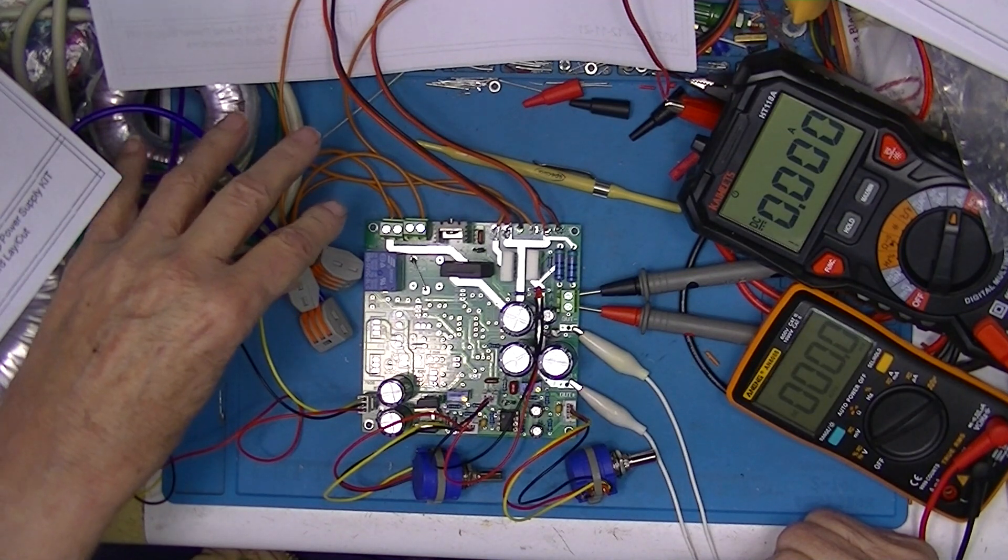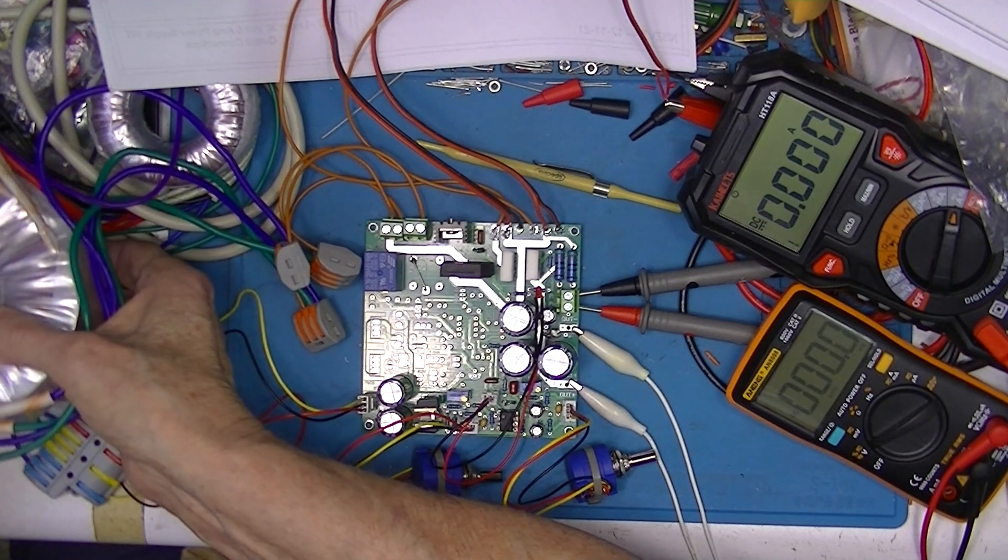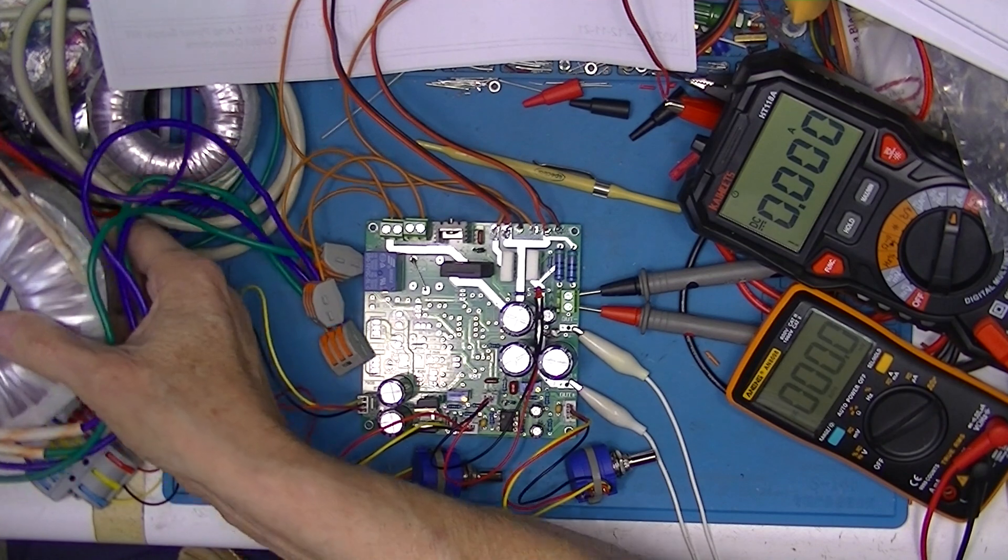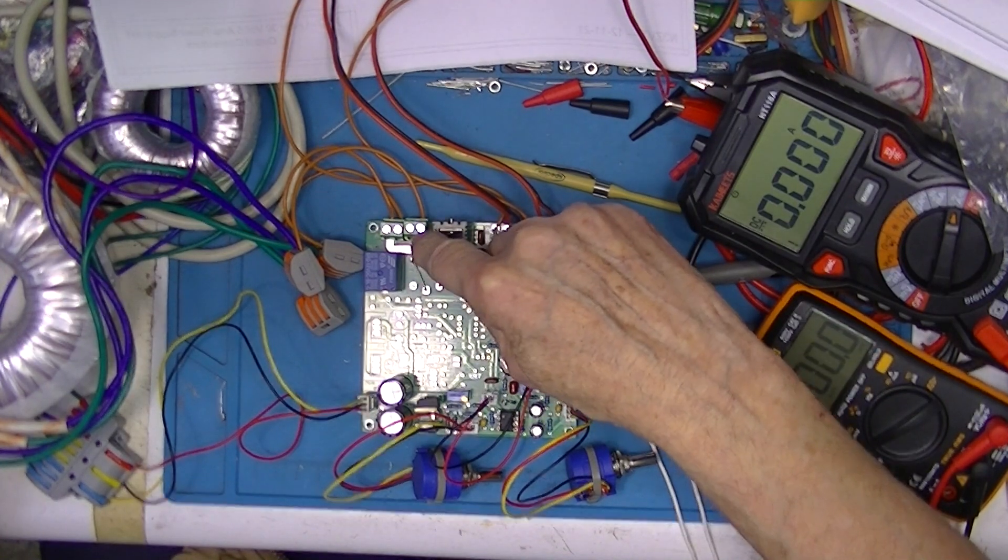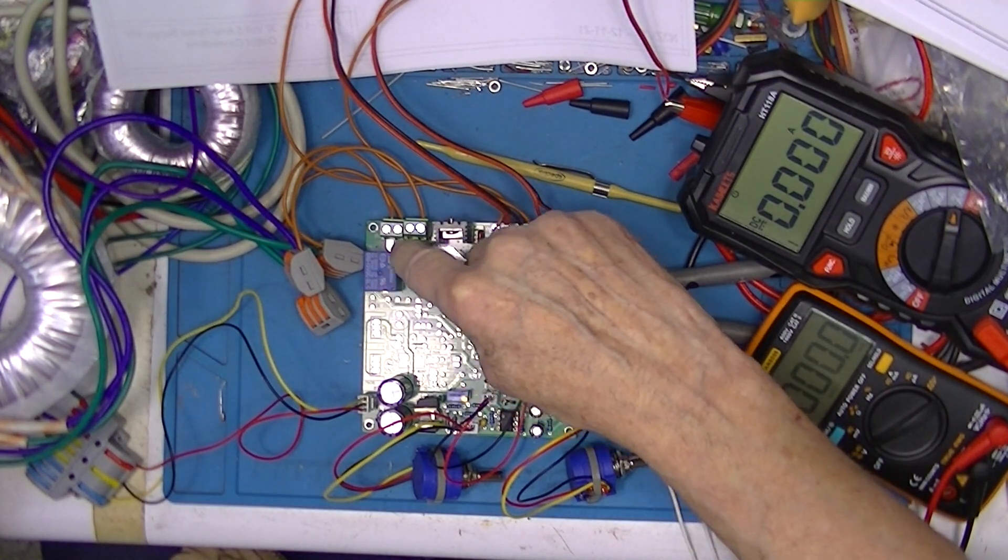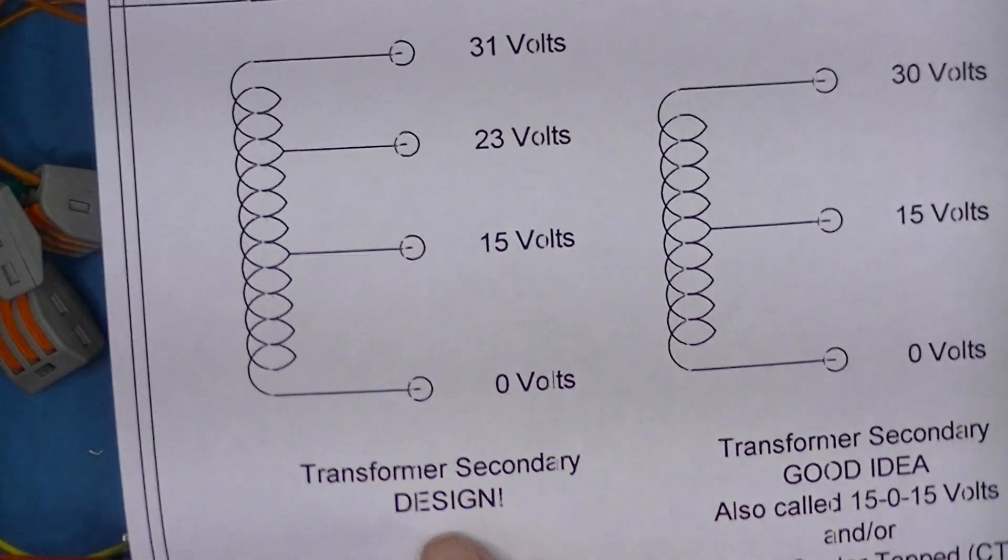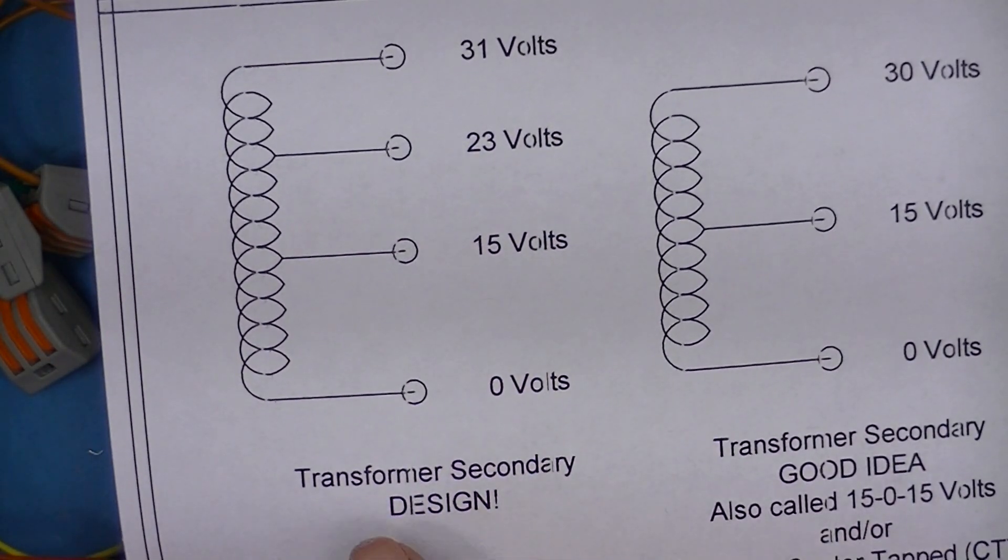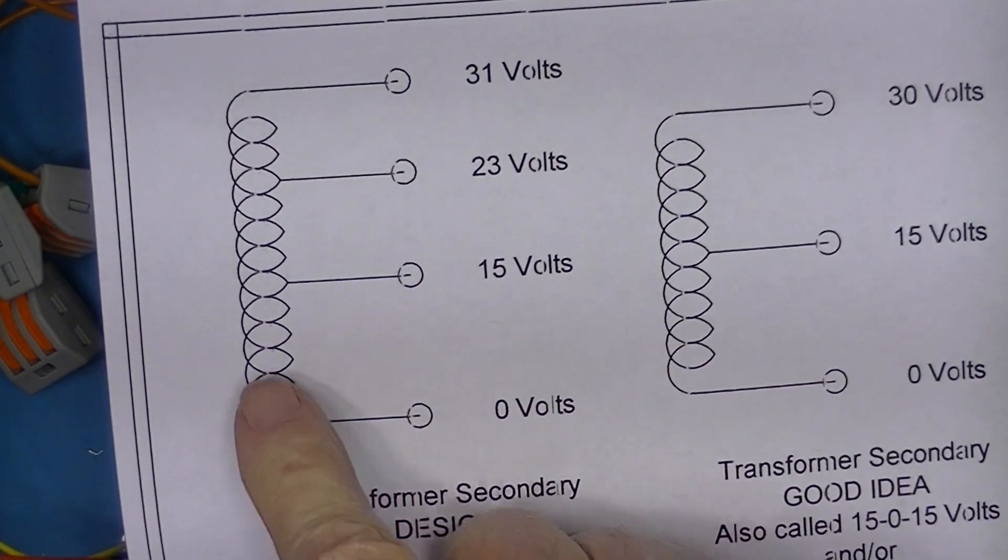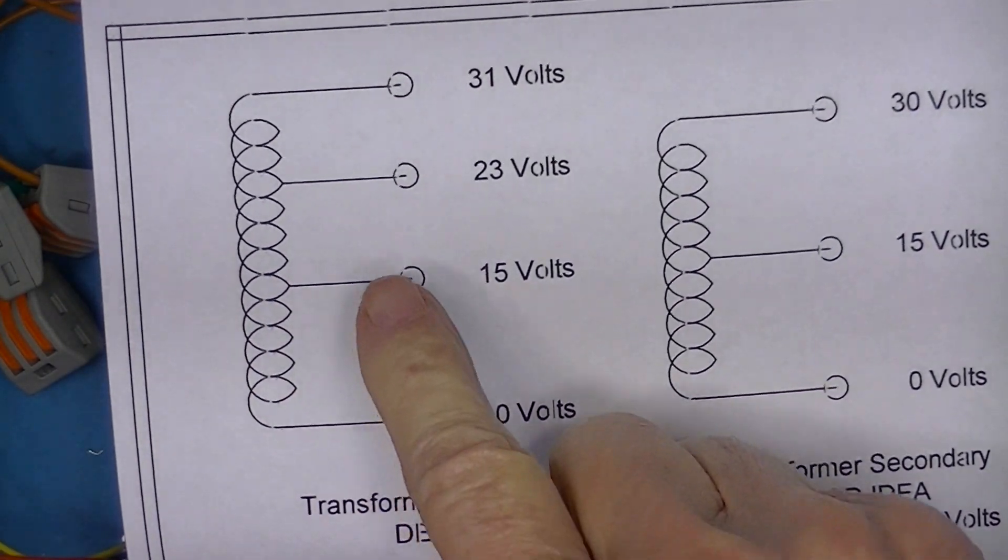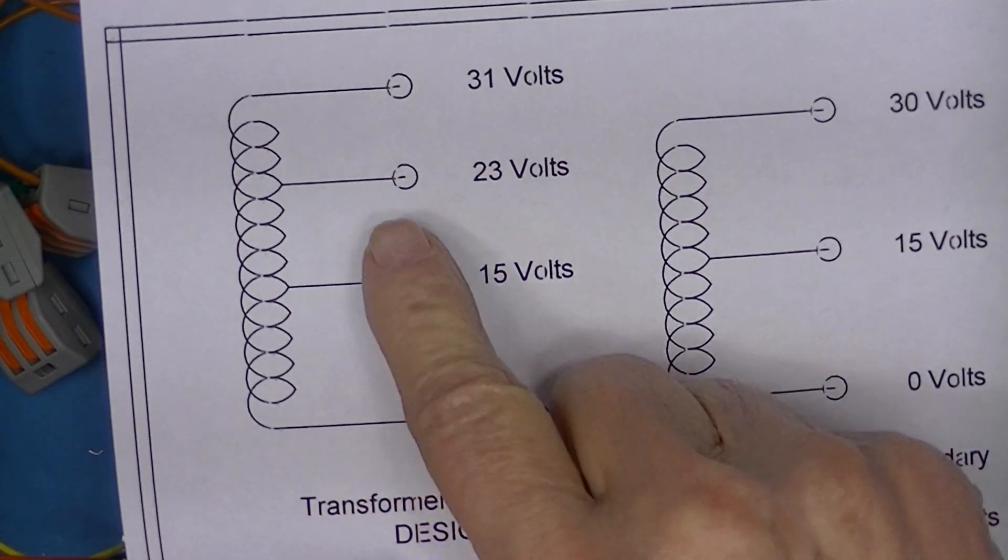Power for this thing comes from this really large and really heavy toroidal transformer. Now let's talk about the transformers and the input relays. This power supply was designed to use this transformer secondary. We start at the bottom and call that zero volts or reference volts. The designer would have us furnish a transformer with taps incrementing upwards from zero to 15 volts, zero to 32 volts, and zero to 31 volts.